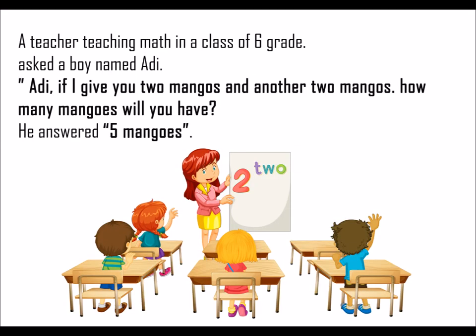A teacher teaching maths in a class of grade 6 asked a boy named Adi: 'Adi, if I give you two mangoes and another two mangoes, how many mangoes will you have?' He answered, 'Five mangoes.'